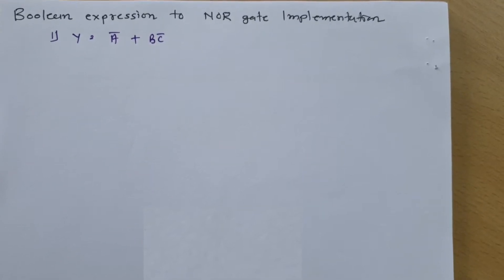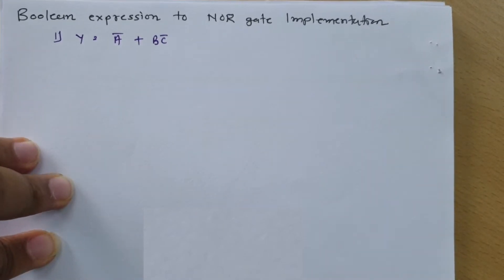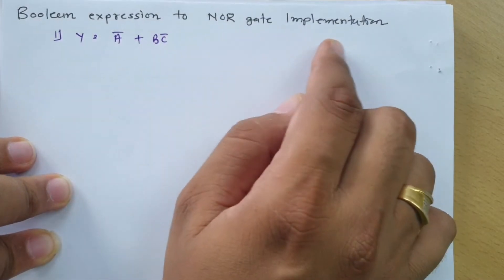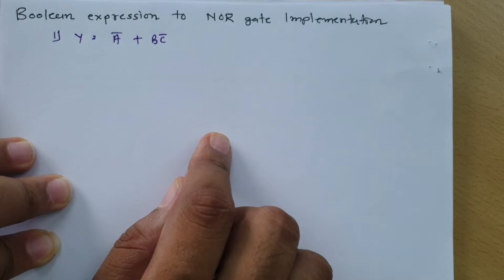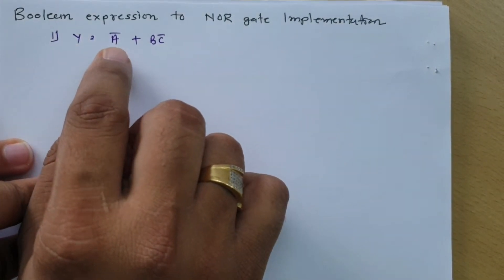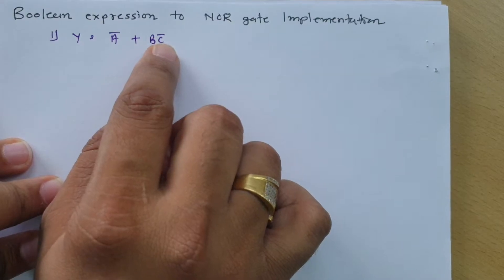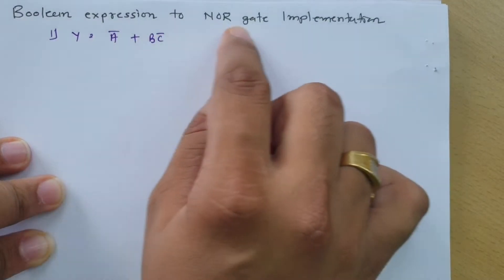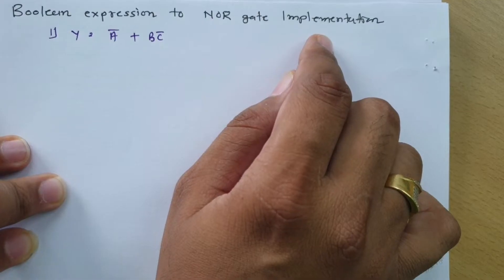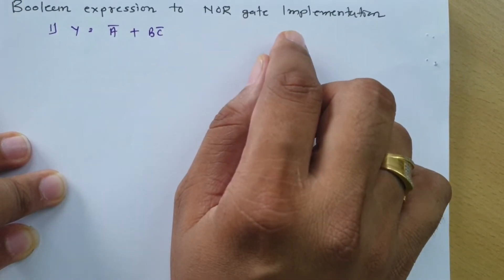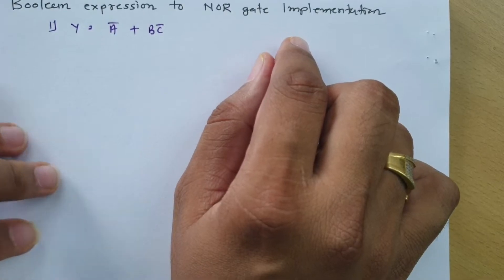Welcome to digital electronics lecture series. Professor Ritesh Dholakya is going to explain Boolean expression to NOR gate implementation in this session. We have Boolean expression y = ā + bc̄, and we are going to translate that into NOR gate implementation. To convert this Boolean expression in terms of NOR gate implementation, there are a few steps which we need to follow.